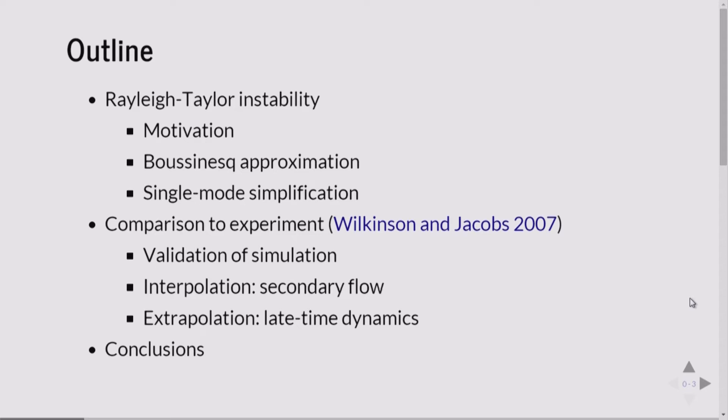The meat of the talk will be this comparison to experiment, which was performed by Wilkinson and Jacobs in 2007. I'll start by validating our numerical results to their results, and then talk about some advantages that the computational form of the data have over the experimental, in particular looking at span-wise secondary flows and then extrapolating to later time dynamics, which would involve building a much larger and more expensive experiment.